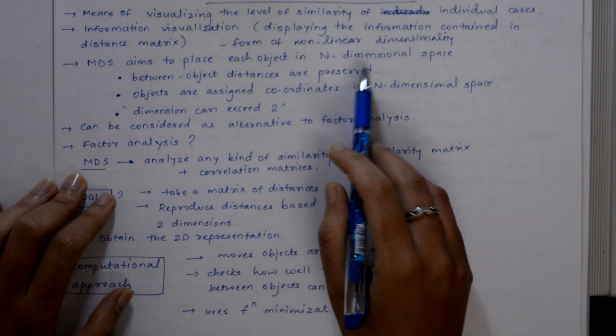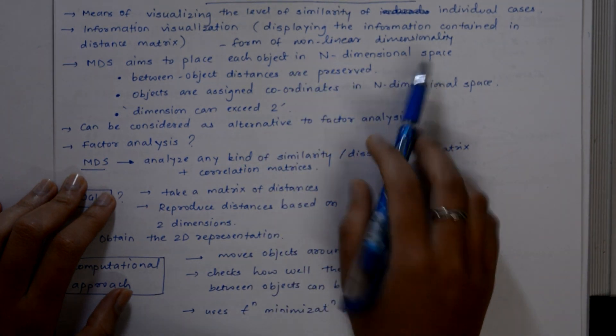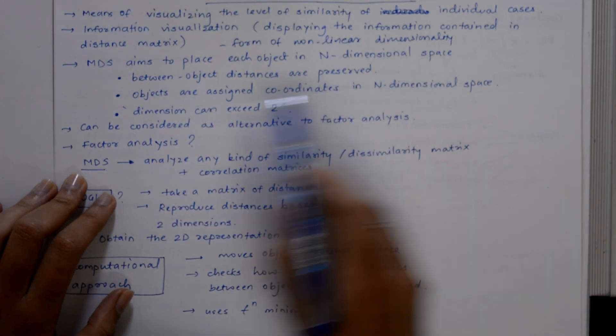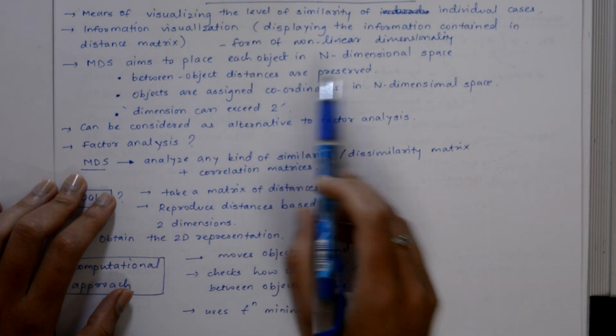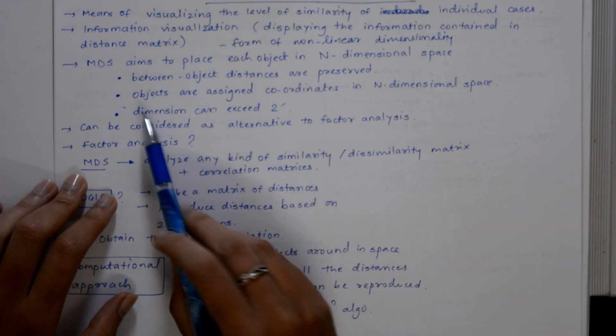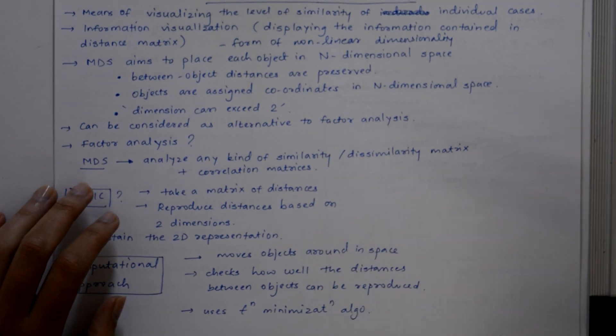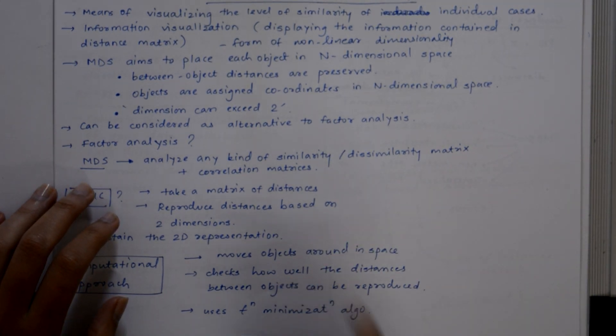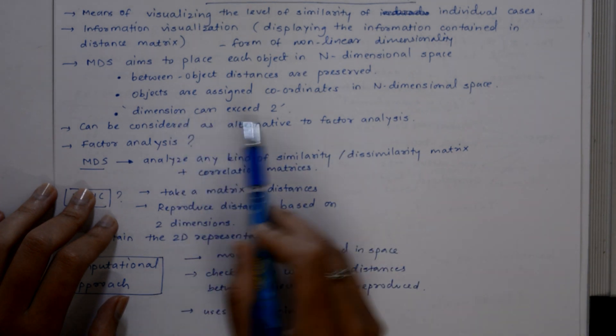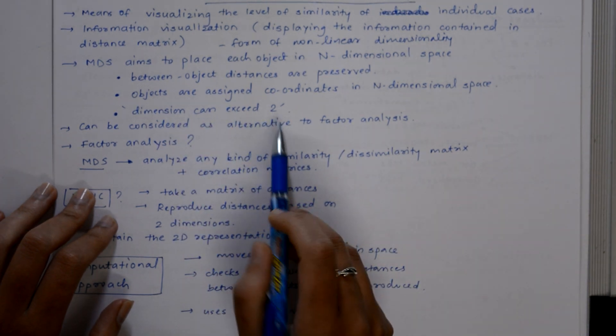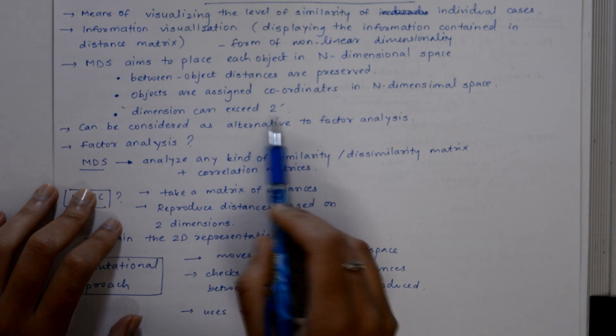The MDS algorithm aims to place each object in n-dimensional space such that the between-object distances are preserved. The objects are assigned coordinates in n-dimensional space. In this case, dimension can exceed the value 2, but choosing n equal to 2 optimizes the object locations for a 2D scatter plot.